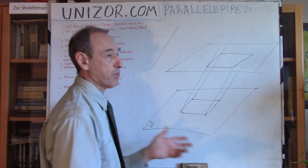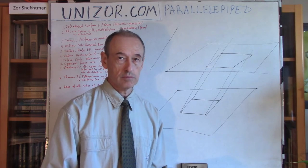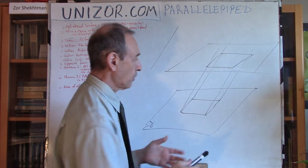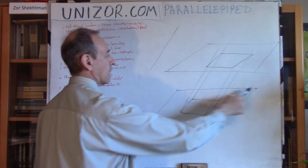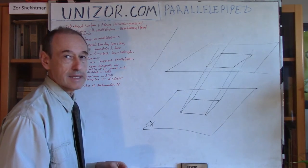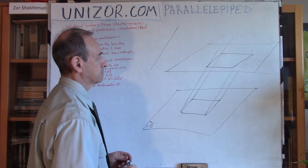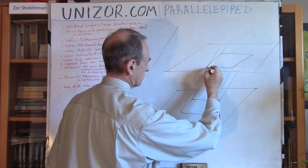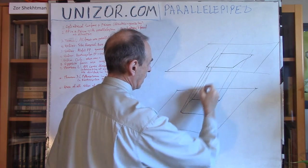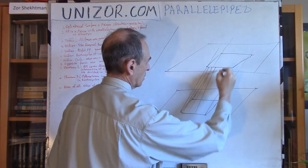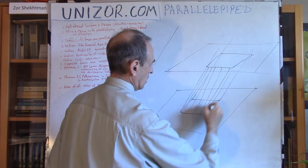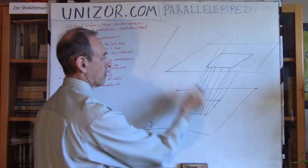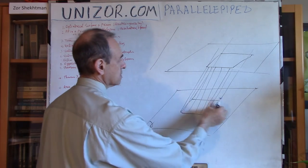The first theorem I am going to prove about this figure — which we will have the right to call a parallelepiped — is that every face is a parallelogram. Let's start from the bottom. The bottom is a parallelogram by definition, because that is exactly how we started: the directrice is supposed to be a parallelogram in some base plane. Now, all these lines are parallel to the generatrix, which means they are all parallel to each other.